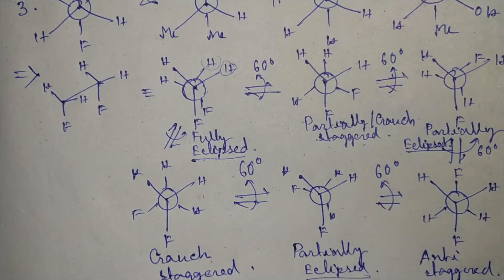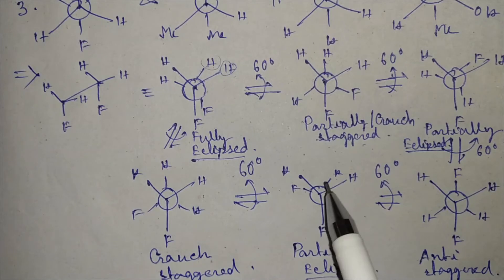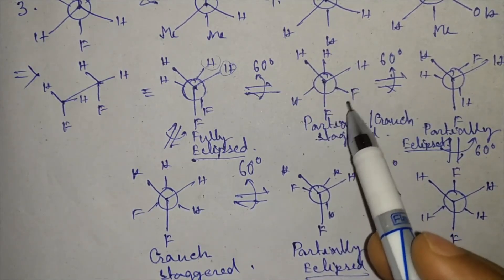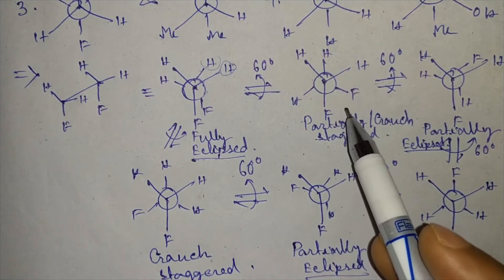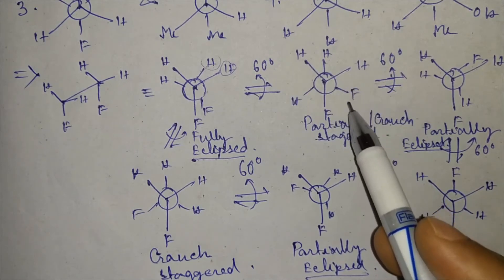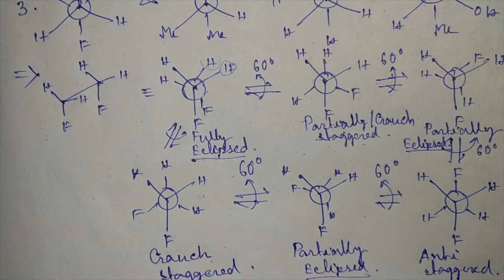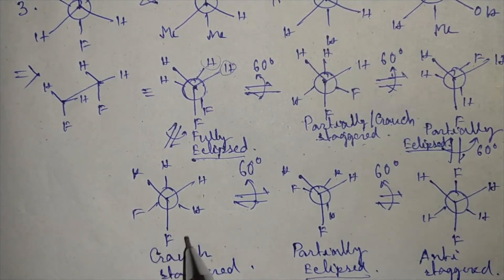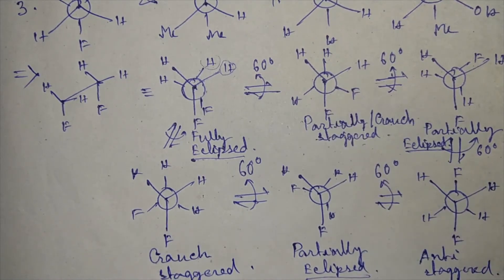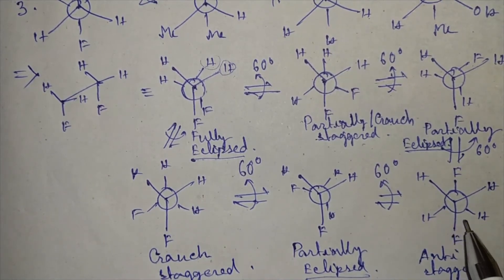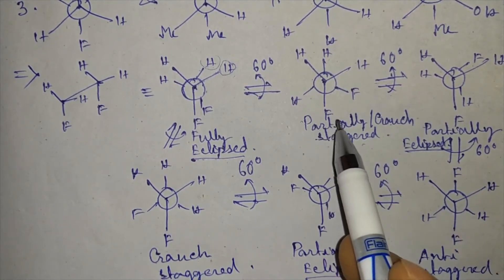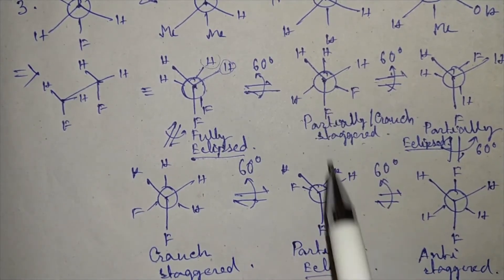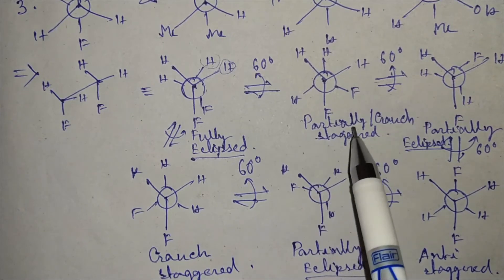We will now compare the three staggered conformers. In the gauche staggered conformation, the fluorines are at a 60 degree angle, so some steric crowding is present. In the anti staggered conformation, the fluorines are opposite to each other, so there is no steric crowding. The two gauche staggered conformers are actually similar to each other.